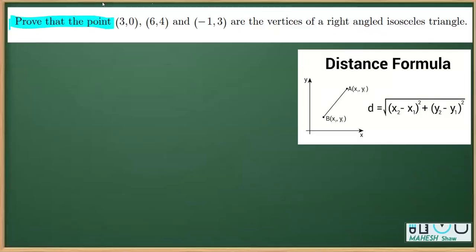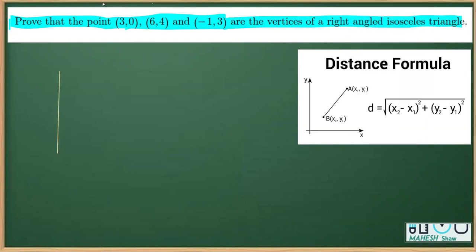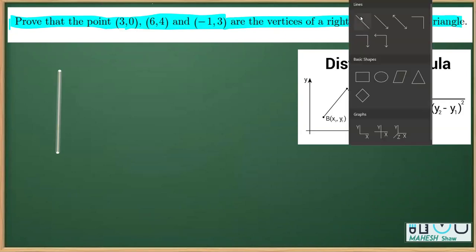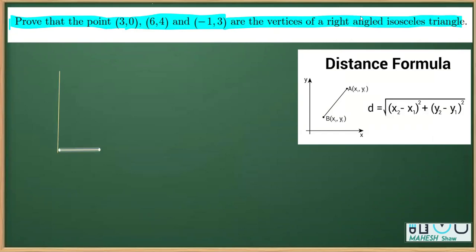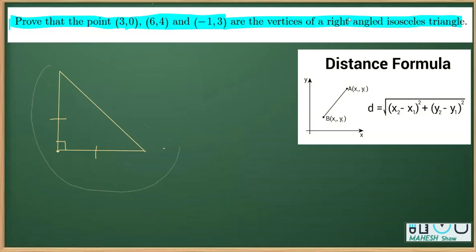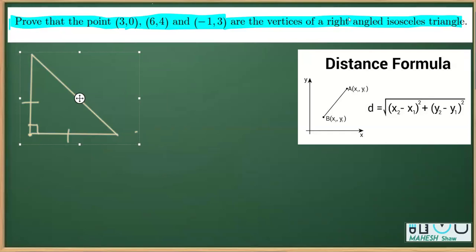The question here says to prove that these three points, whose coordinates are given, are the vertices of a right angle isosceles triangle. We know that in a right angle isosceles triangle, one angle is 90 degrees and two of its sides are equal. Let's say I make a right angle triangle that is isosceles as well, where these two sides are equal. As of now I'm not naming these points, for the reason that we do not know the order here.